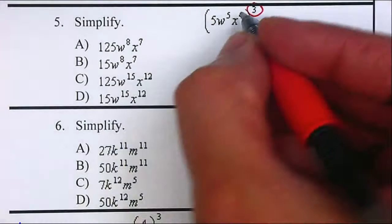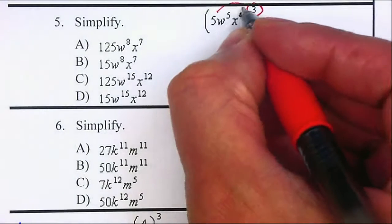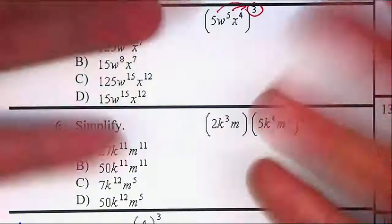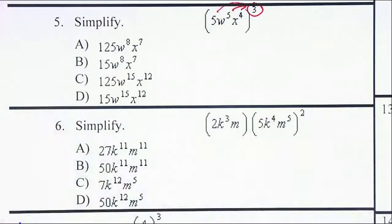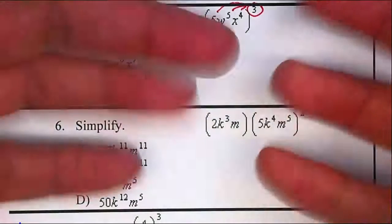So we're going to use our power property that tells us that we can distribute the exponent to all of them. Right, so it's going to go into each one of them.